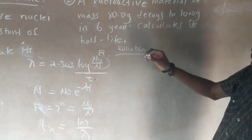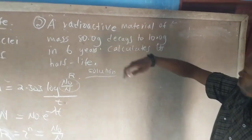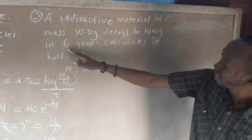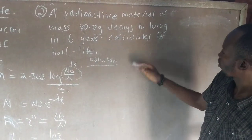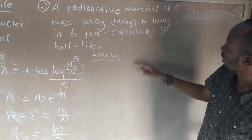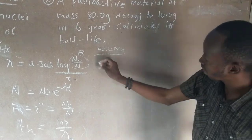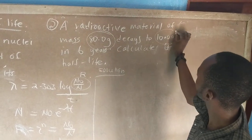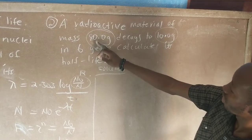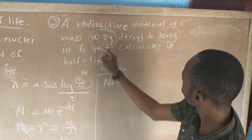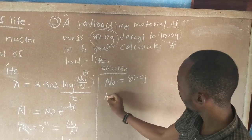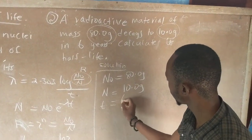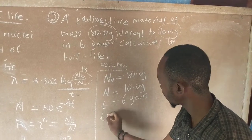The second example: a radioactive material of mass 80 grams decays to 10.0 grams in a period of 6 years. We are required to calculate its half life. Our given values are: N₀ equals 80.0 grams (the initial mass), N equals 10.0 grams (the final mass), and time t equals 6 years. We are required to find the half life T½.